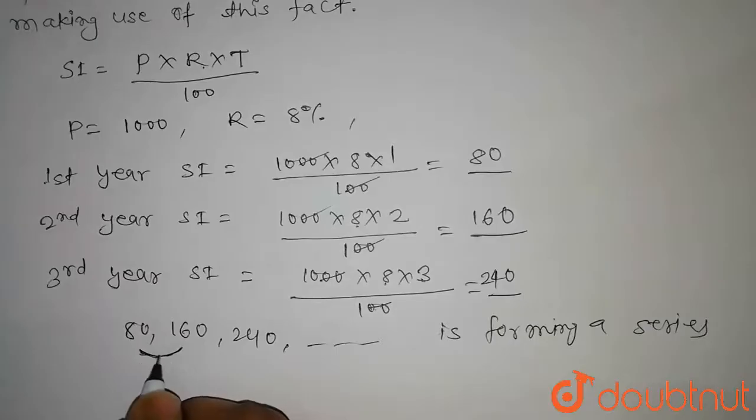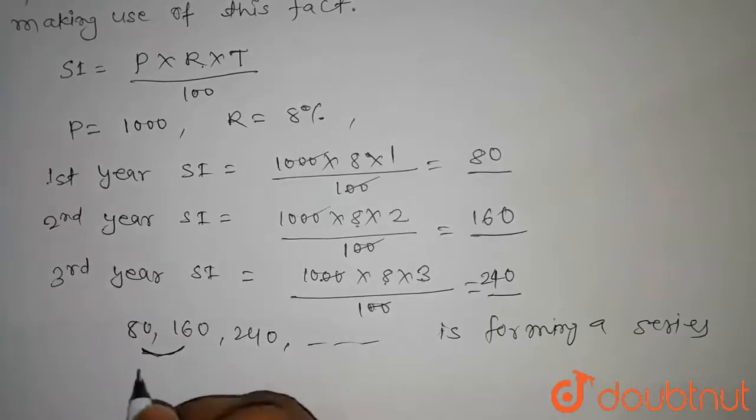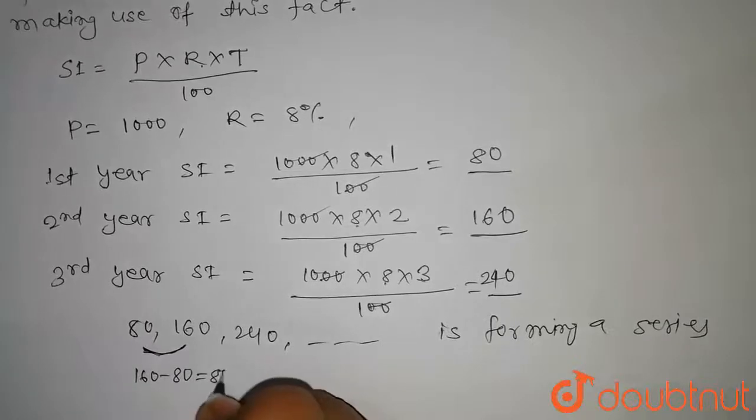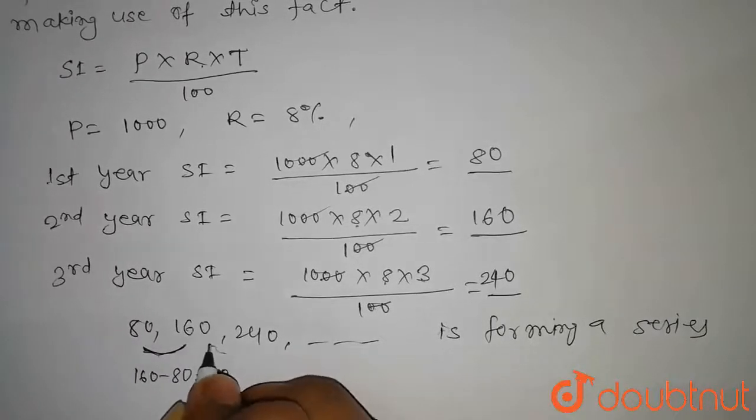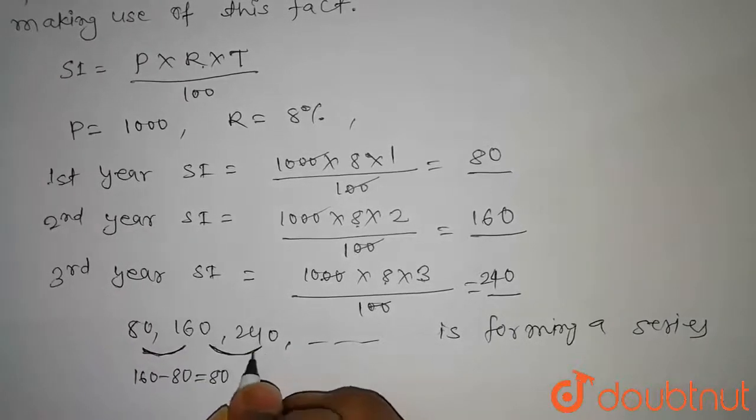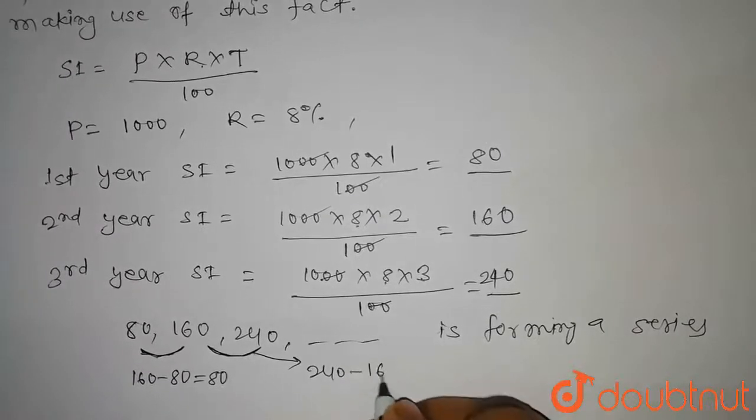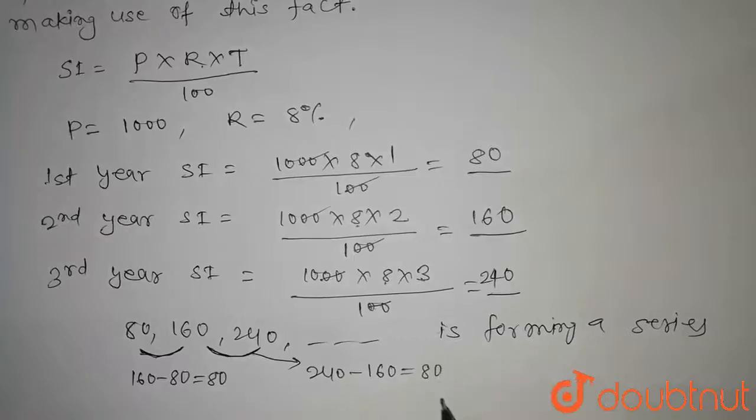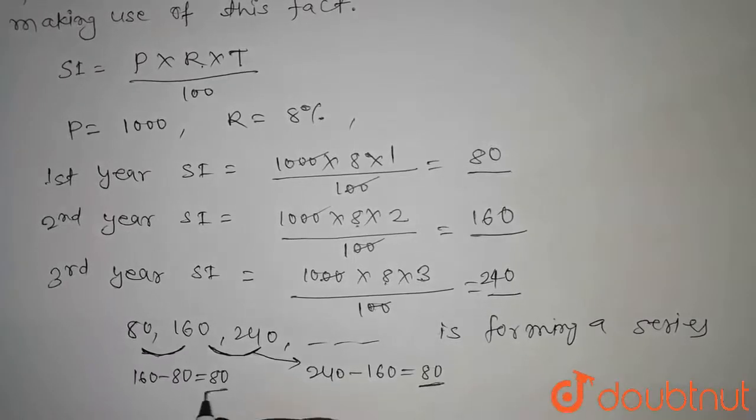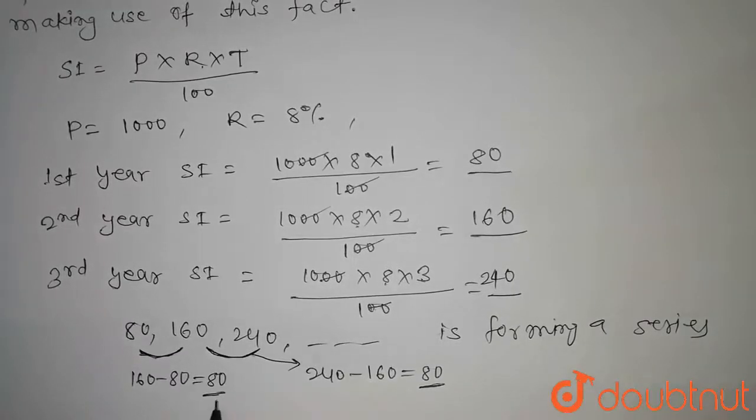The common difference between second and the first term is 160 minus 80, that is equal to 80. Similarly, the common difference between the third term and the second term is 240 minus 160, that is equal to 80. Here we notice that the common difference is same.